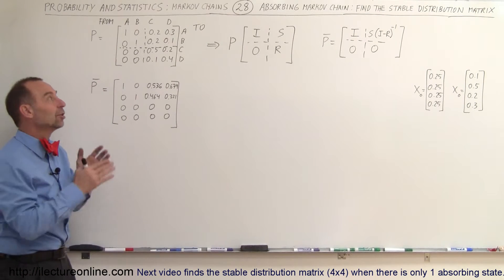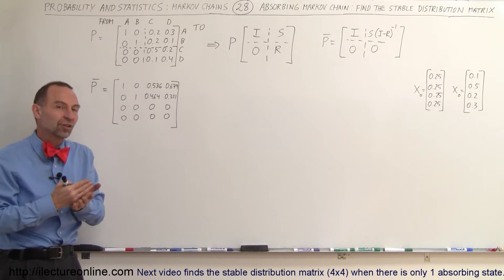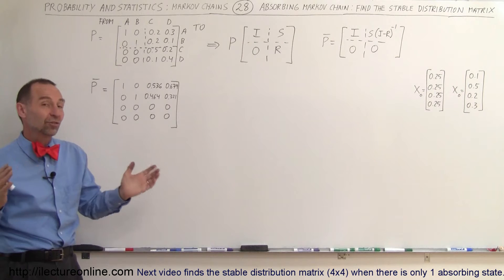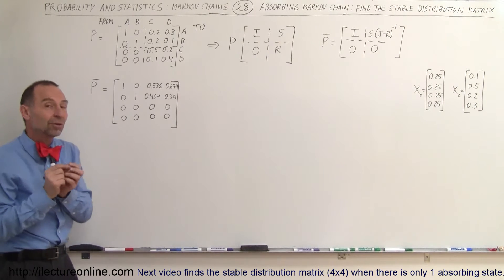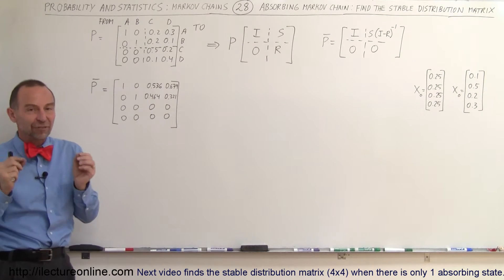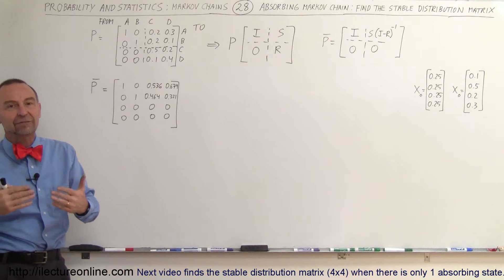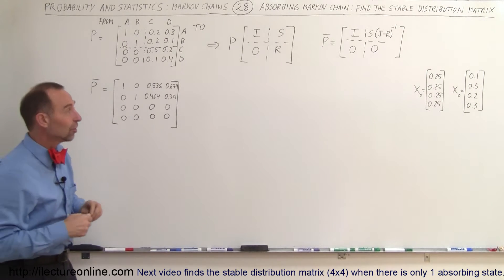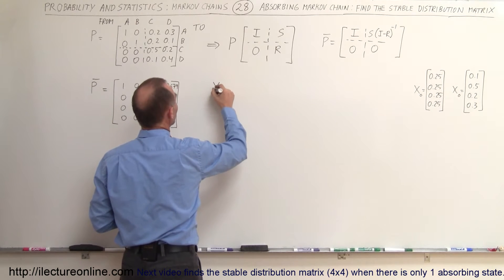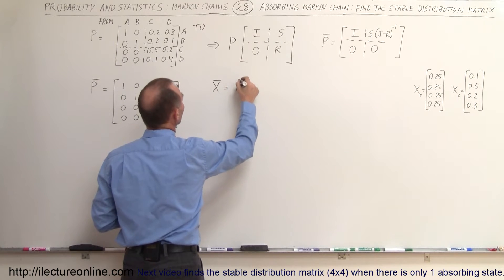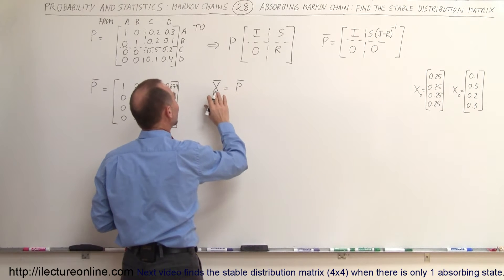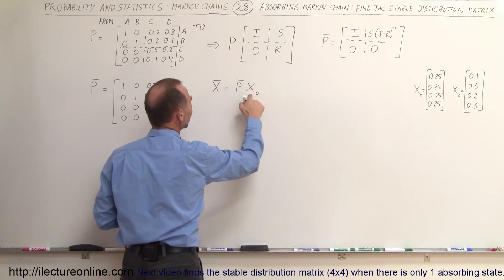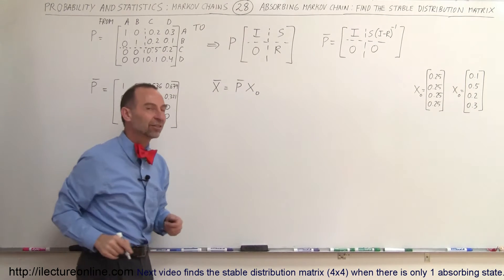That was not the case when we had a non-absorbing Markov chain — the final stable distribution state could always be found using our equations. And when we only have one absorbing state the final distribution is a given and easy to find. But when we have two absorbing states, the stable distribution matrix is equal to the stable transition matrix times the initial state, so if the initial state is different we get a different final distribution matrix.